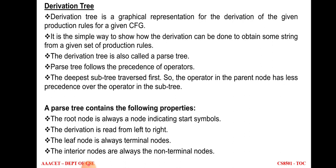The next concept is the derivation tree, also called a parse tree — it is the graphical representation of derivation. A parse tree has four properties: (1) the root node is always the start symbol; (2) the derivation is read from left to right; (3) leaf nodes are always terminal symbols; (4) interior nodes are always non-terminal symbols.